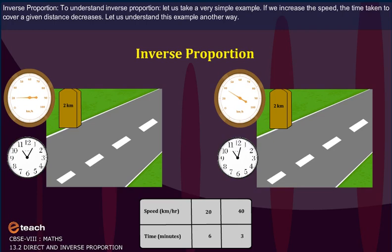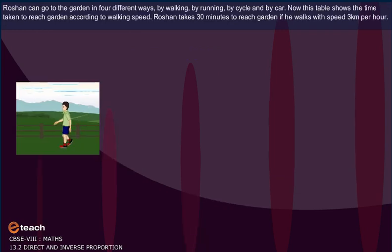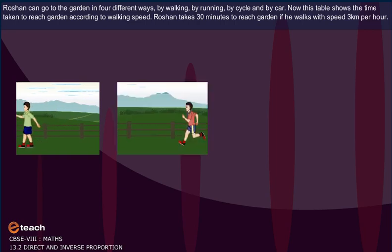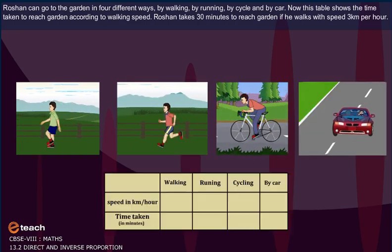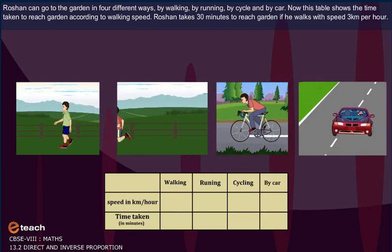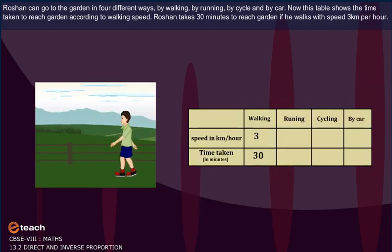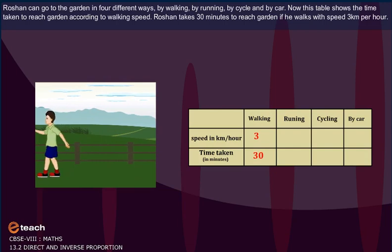Let us understand this example another way. Roshan can go to the garden in four different ways: by walking, by running, by cycle and by car. Now this table shows the time taken to reach garden according to walking speed. Roshan takes 30 minutes to reach the garden if he walks with speed of 3 km per hour.